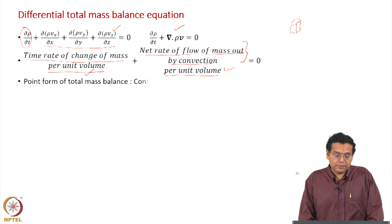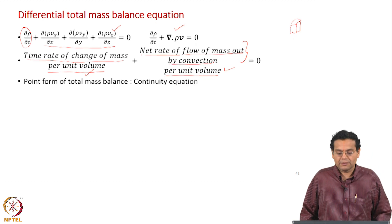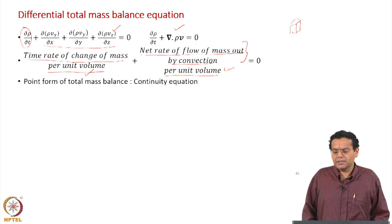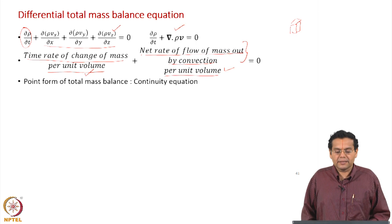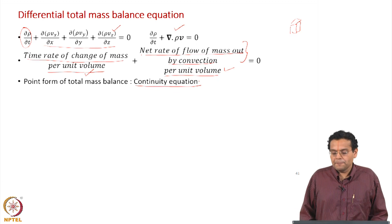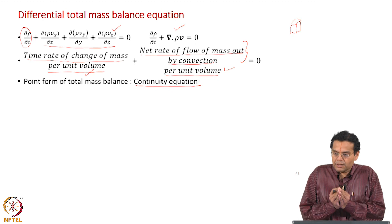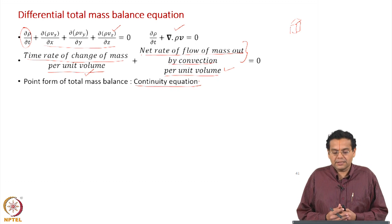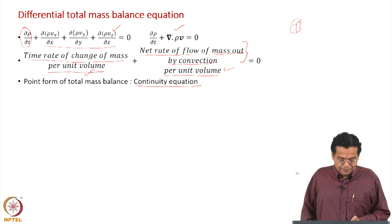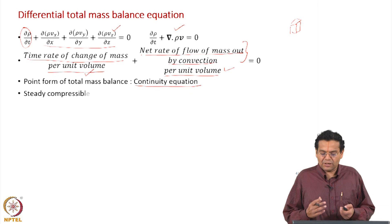What are the other names for this differential total mass balance equation? Because we consider a control volume and shrink it to a point, it is also called the point form of the mass balance equation. We have also been calling it the differential form of the mass balance equation. The most popular name, however, is the continuity equation. All three names convey the same meaning: mass balance in a small region under steady or unsteady state conditions.